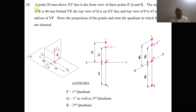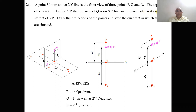We will take up one more problem on projections of points involving a combination of quadrants. A point 30 mm above the XY line is the front view of three points P, Q, and R. The top view of R is 40 mm behind VP. The top view of Q is on the XY line, and the top view of P is 45 mm in front of VP. Draw the projections of the points and state the quadrant in which the points are projected.